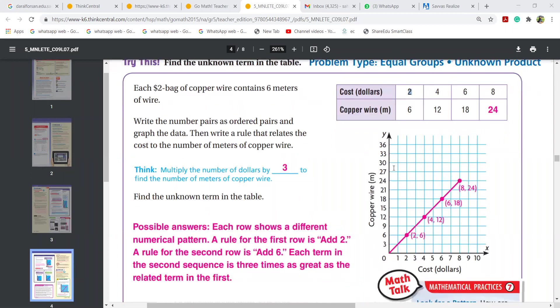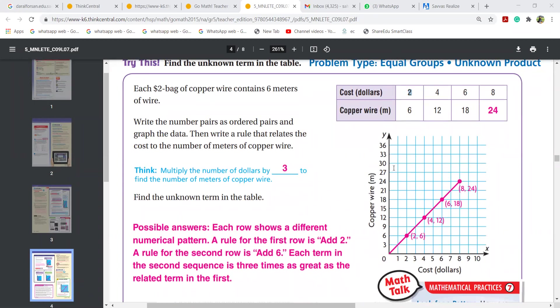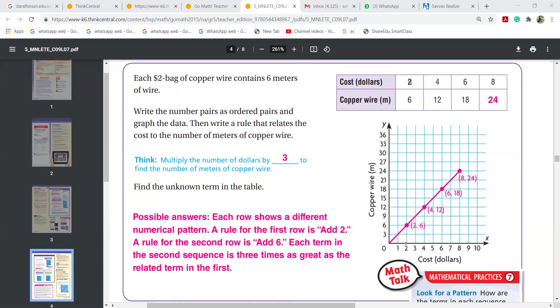And then, how will you make the pairs? Two comma six, four comma twelve, six comma eighteen, eight comma twenty-four. This is how you make the pairs. Yes, you need to write this and you need to make the graph. Two comma six: you'll put your pen to two and go up to six. You'll put your pen to four, go up to twelve, because it is four comma twelve. Put your pen to six and go up to eighteen. Go to eight, go up to twenty-four, and put a dot. Then join the line, and this is called the line graph.